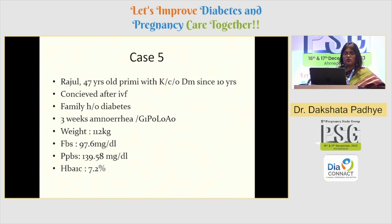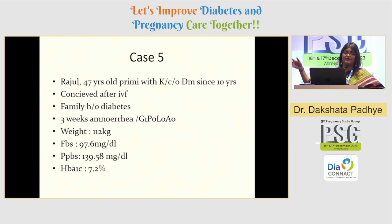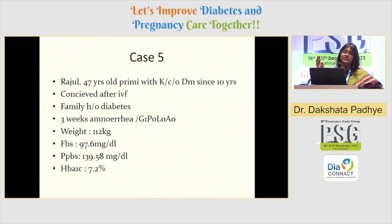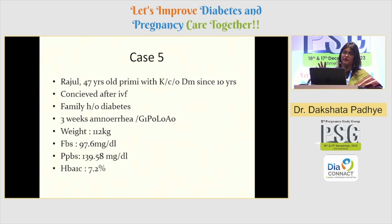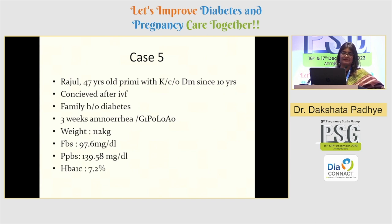Case 5: Diabetic since 10 years, weight around 112 kg. Conceived after IVF, super precious pregnancy, 47 years old, diabetic. She's been planning her pregnancy for the last five years. She was 128 kg, has lost about 16 kg. Fasting 97, PP 139, and HbA1c 7.2, now on IVF. She is diabetes in pregnancy — a type 2 diabetic patient who has planned her pregnancy. She's now around seven to eight months pregnant. She could achieve HbA1c 7.2 only on insulin, metformin, and lifestyle modification.